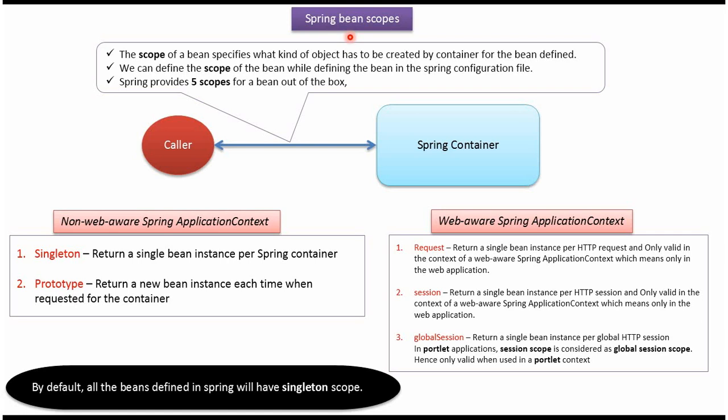In this video tutorial I will cover Spring bean scopes. Here you can see the caller, and here you can see the Spring container. The caller will make a call to the Spring container to get the bean instance. Based on the bean scope, the Spring container will decide what kind of object to be created and return to the caller. We can define the scope of the bean in the Spring configuration file.